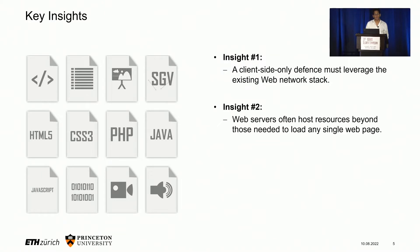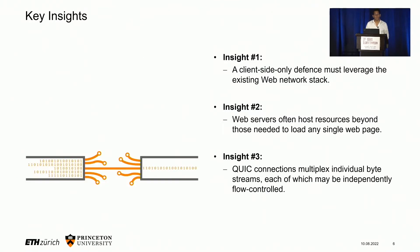The second insight is that most web servers host resources beyond those required to load any single web page, and these resources can — regardless of which web page is being viewed — be requested to add chaff or padding from the server to the client. The third insight is that QUIC connections multiplex multiple individual byte streams, where each byte stream delivers a single HTTP resource. Furthermore, each of these byte streams can be independently flow-controlled by the client, allowing prioritizing application data over other data, as well as stopping or pausing one flow of data while allowing another.